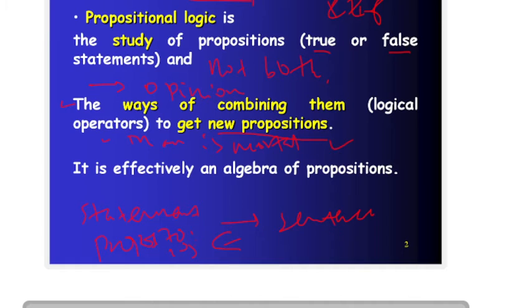For example: Man is mortal. Addis Ababa is the capital city of Ethiopia. These are propositions we can use.